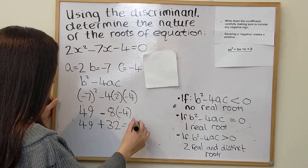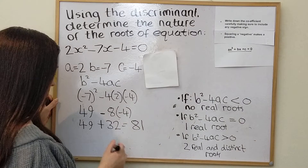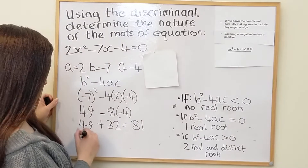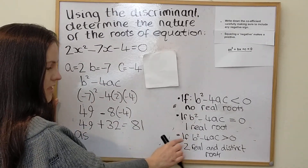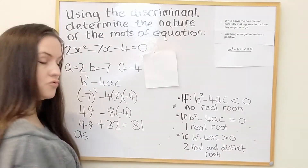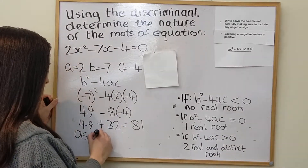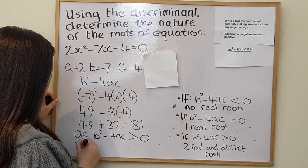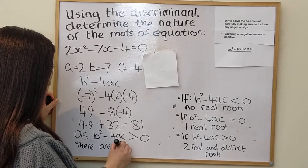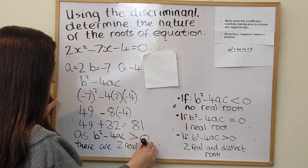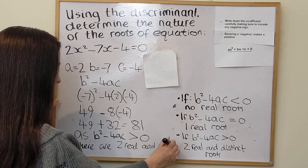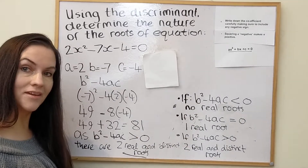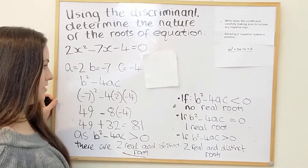So we end up with 49 plus 32, which is 81. Since b squared minus 4ac equals 81, which is greater than zero, we have two real and distinct roots. It might be a good idea to get a screenshot of the reference rules or just write them down.